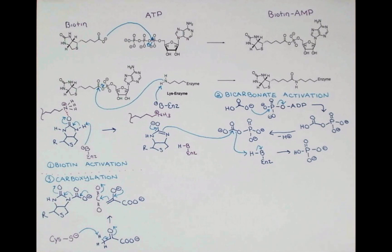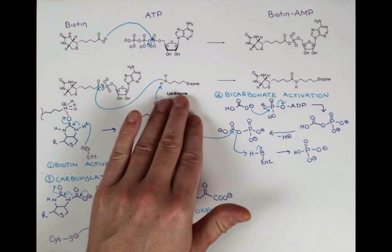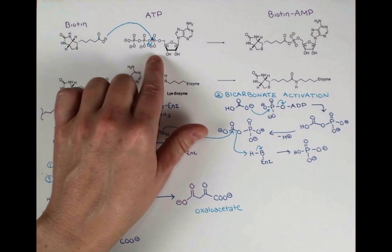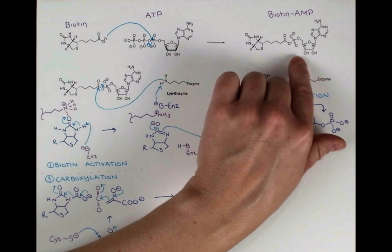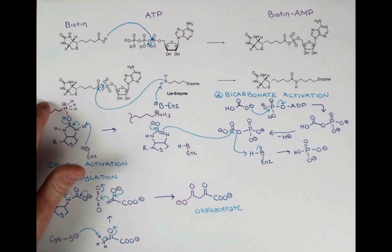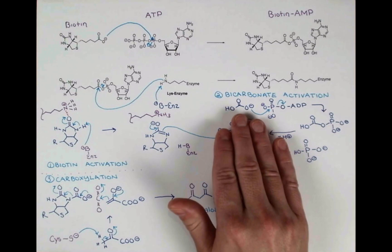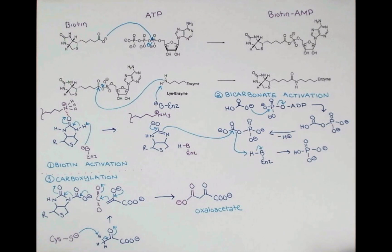To sum up, biotin is a coenzyme, an enzyme helper that allows for the carboxylation of enolates. Biotin needs to be activated to be linked up to a lysine residue on an enzyme covalently. This activation occurs with ATP and forms an intermediate. Biotin first needs to be deprotonated to act as a nucleophile, and the enzyme active site can facilitate that process.